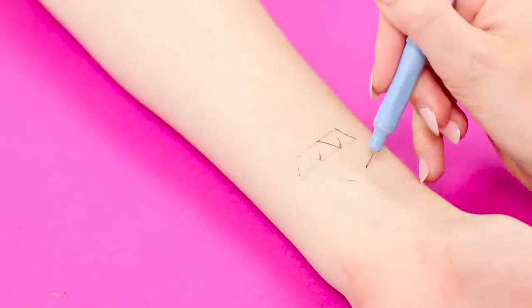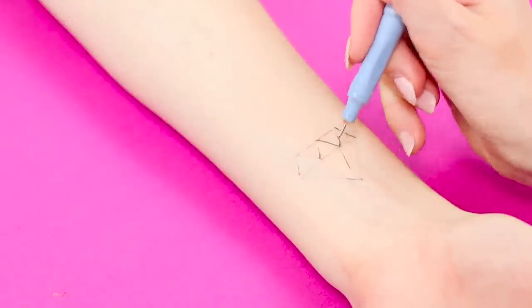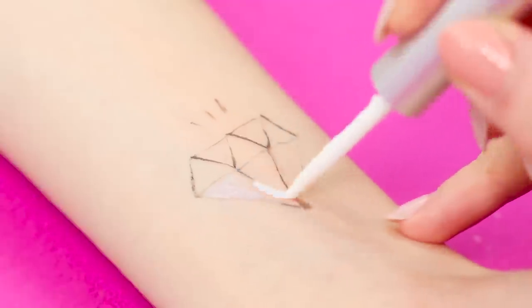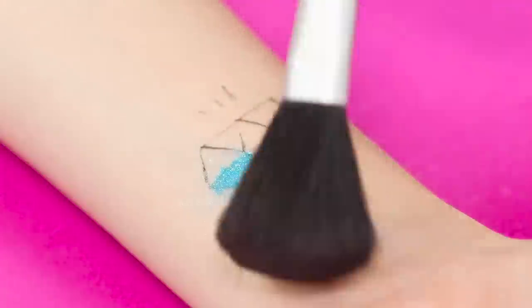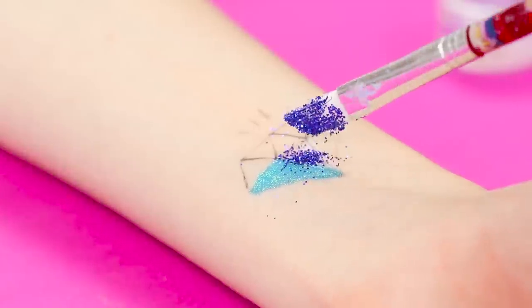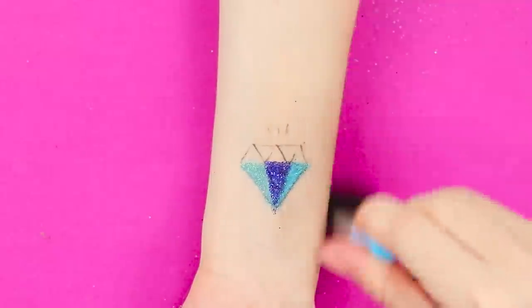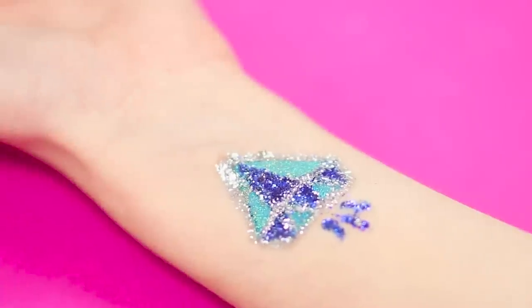Apply glue to one of the faces of the diamond. With a dry brush, tap the glitter onto the glue. Brush extra sparkles. Alternating colors, fill the whole picture with glitter. How beautifully your new tattoo shines in the sun!